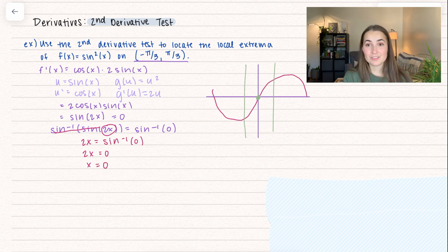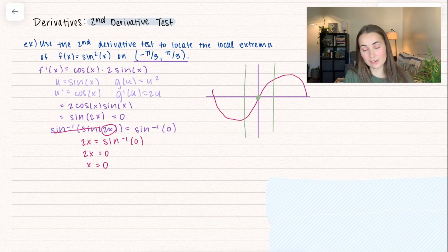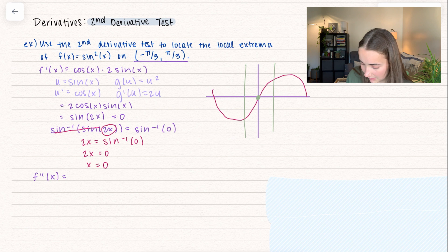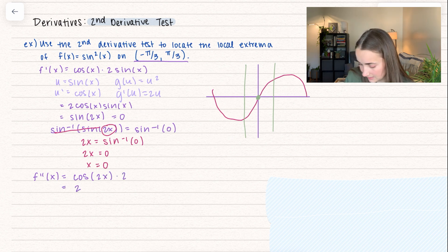The second derivative test uses the second derivative, so let's find it before we use the critical value. For f double prime of x, using chain rule we get the derivative of the outside, cosine at 2x, times the derivative of the inside, which is 2. So f double prime of x equals 2 cosine of 2x.